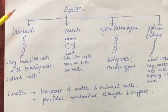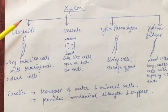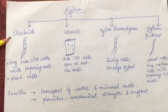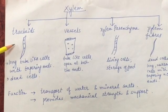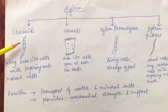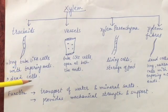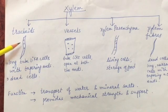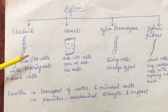Xylem is also known as wood. It comprises four types of cells, so it is known as a complex tissue. First, let us study tracheids. Tracheids are long tube-like cells with tapering ends. Their walls are lignified, meaning the outer covering is of lignin, which is why these cells are considered dead cells. They have pits, which are actually cavities. Tracheids help in the transport of water and mineral salts.